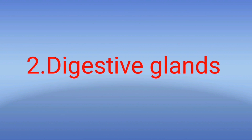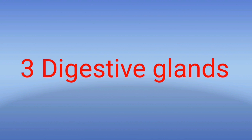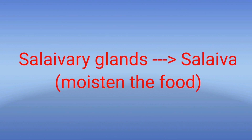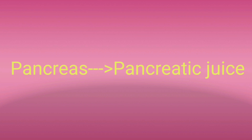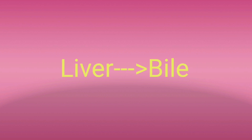The second division of the digestive system is digestive glands. There are three important digestive glands: salivary glands, pancreas and liver. Salivary glands secrete saliva which moistens the food and helps to grind it easily. Saliva contains enzymes that break down complex molecules into simple molecules. Pancreas produces pancreatic juice which contains digestive enzymes for digesting fats, proteins and carbohydrates. Liver produces bile for the digestion of fat.